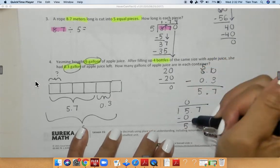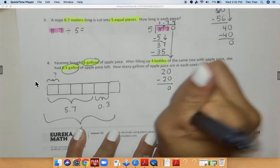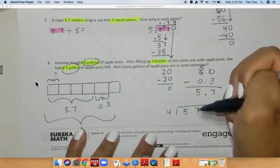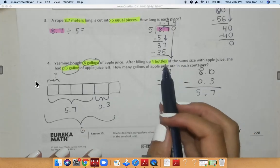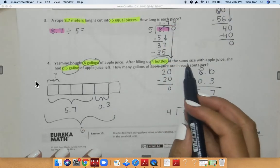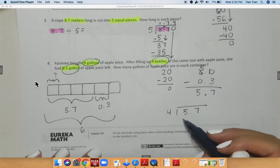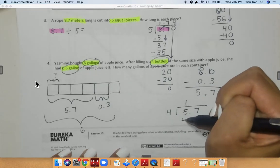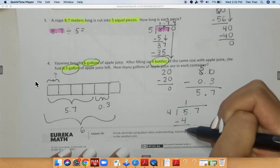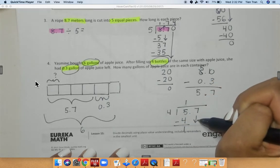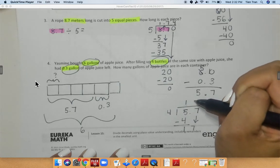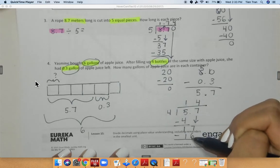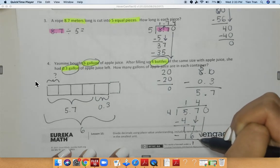This one is 4. So 4. The reason being is there are 4 bottles of the same size of apple juice. That's what I'm dividing. So I have 4. 4 can go into 5 one time. Subtract. 5 minus 4 is equal to 1. Bring down my 7. 4 can go into 17 four times. 17 minus 16 is equal to 1. Add a 0. Bring it down.